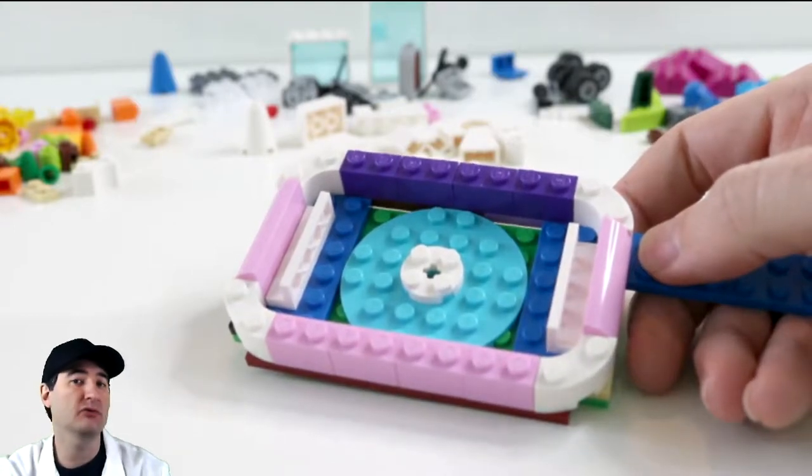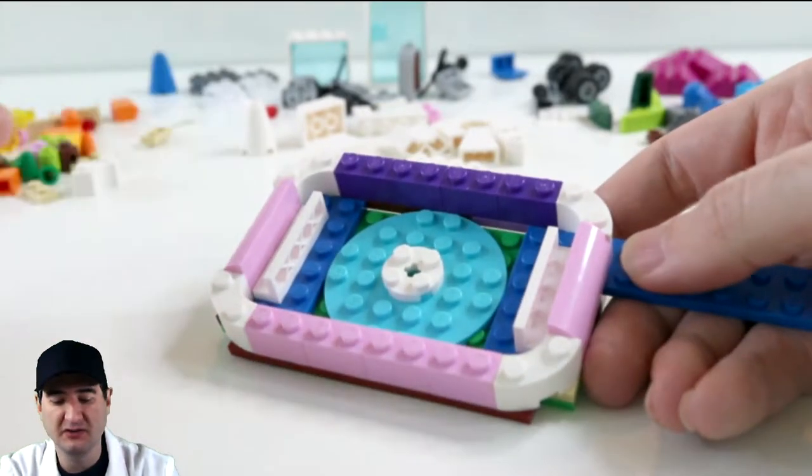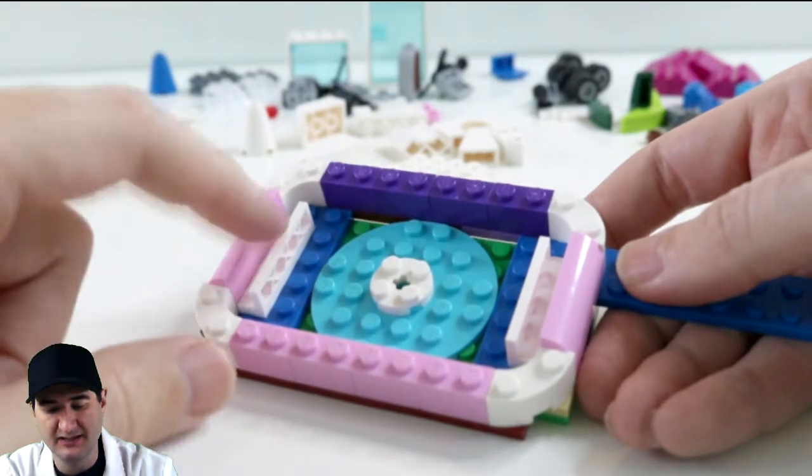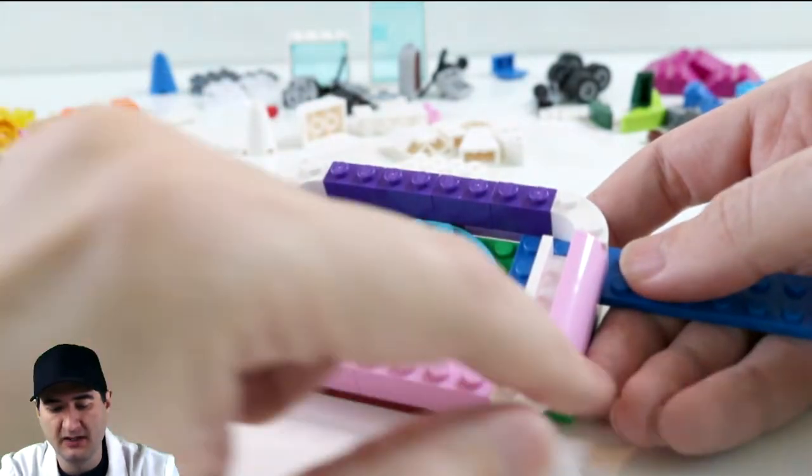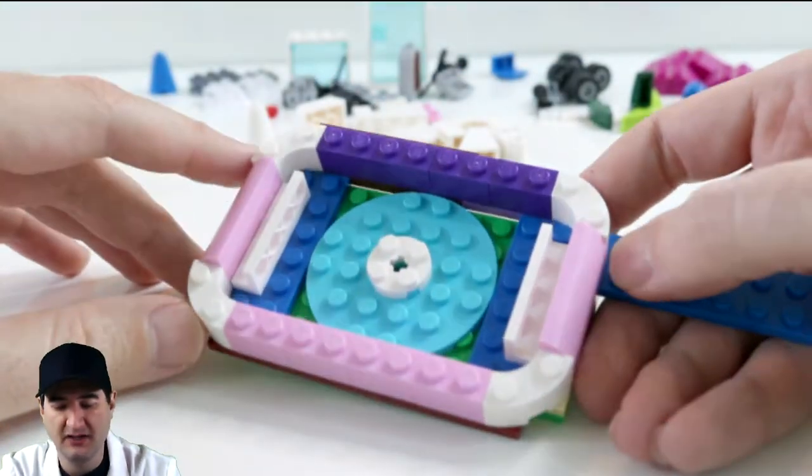So we built an ice rink out of 221 pieces. This is what it looks like. We've got some features here, we've got the nets, we've got the boards in the right kind of overall shape of the ice rink.